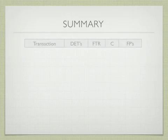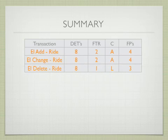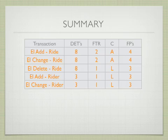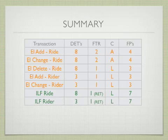To summarize: EI Add Ride is eight data elements, two FTRs — rated as average, four function points. Change is the same. Delete has eight data elements, one FTR — rated as low, three function points. EI Add Rider is a low. EI Change Rider is a low. Note that there is no EI Delete for Rider, because once it's established you cannot delete Rider information — if you did, the whole application would no longer work. Also, ILF Ride has eight data elements and one record type — rated as low, seven function points. Rider is also a low, seven function points.